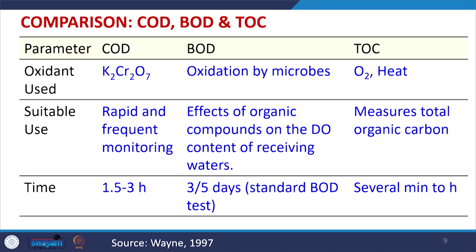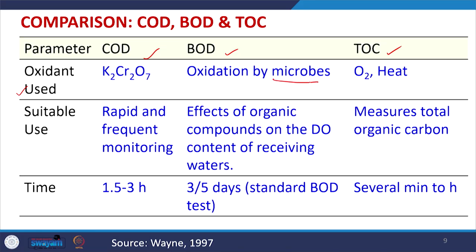What is the difference between COD, BOD, and TOC? We have now learned three parameters: COD, BOD, and TOC. It is important to know when to use which one and what the pros and cons of each are.